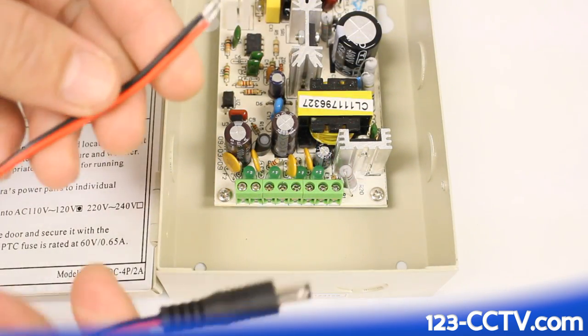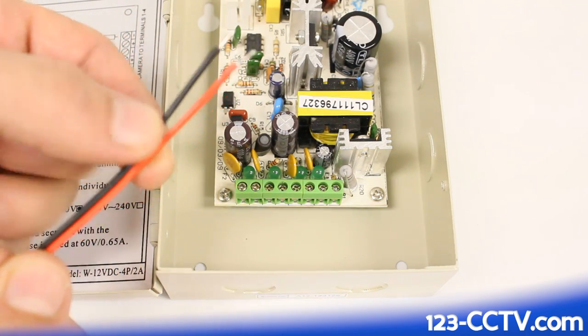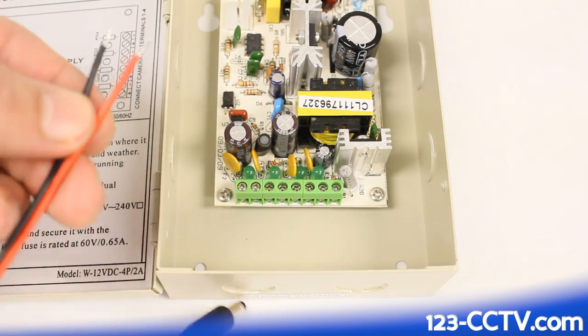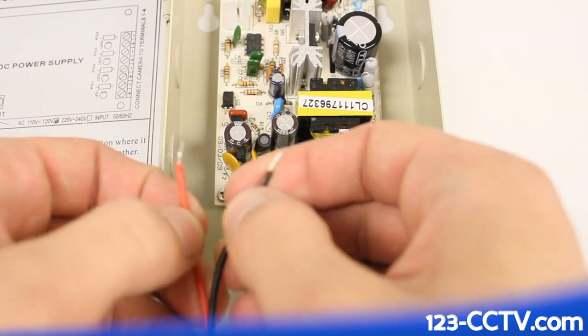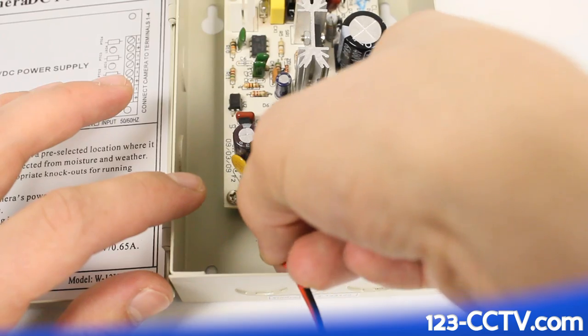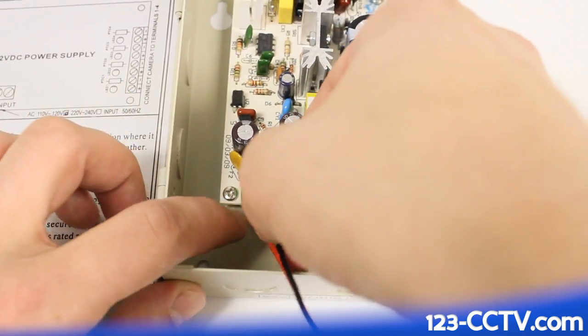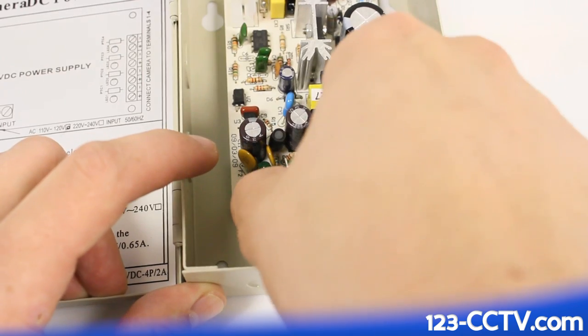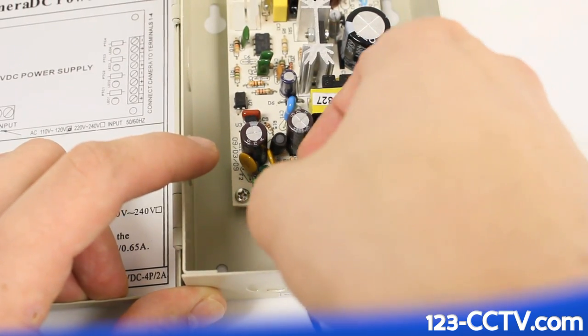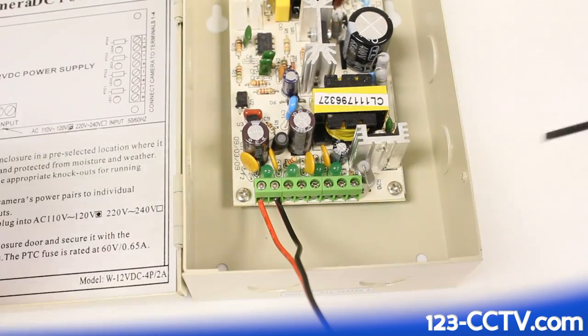On the pigtail, you'll see a black and a red wire. Red means positive, and black is negative. We're going to take these two ends and push them into the positive and negative terminals, and simply tighten them in.